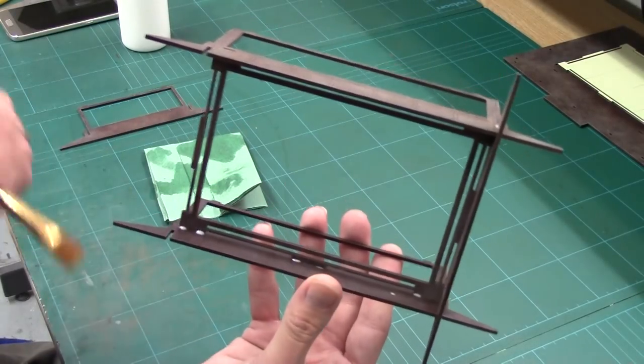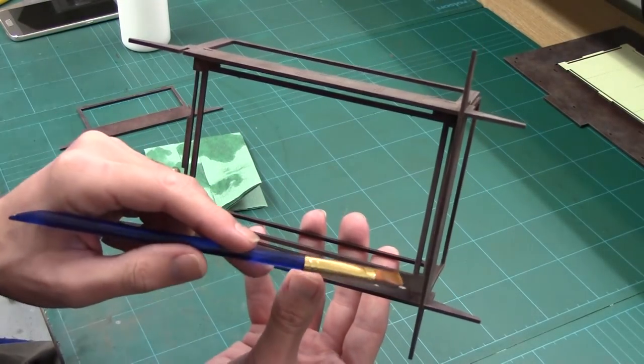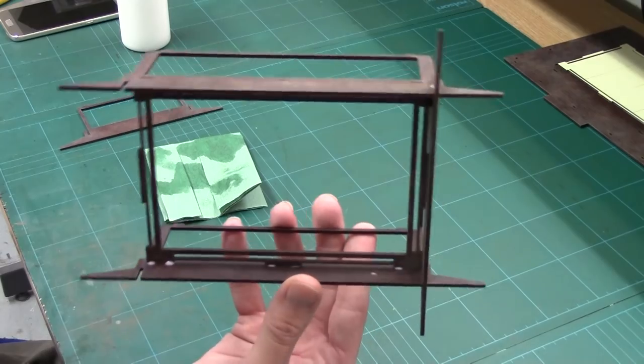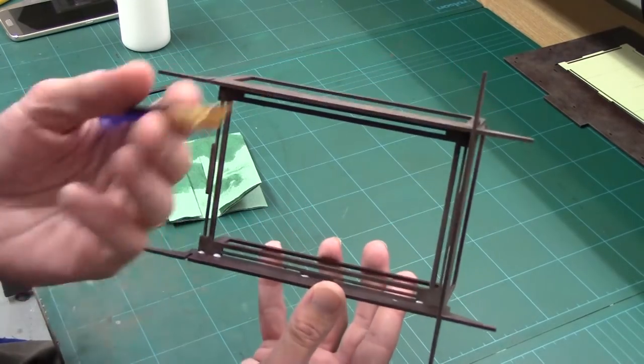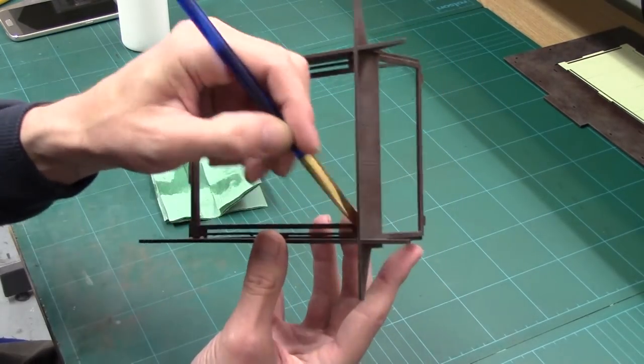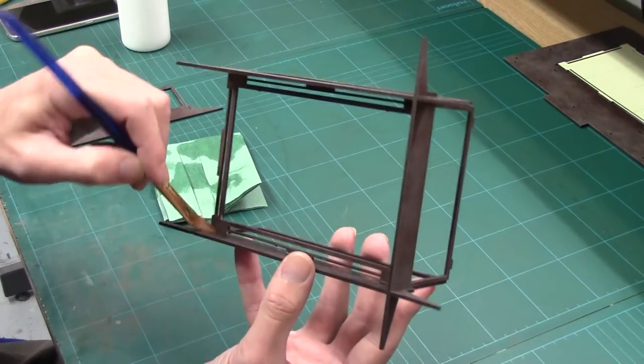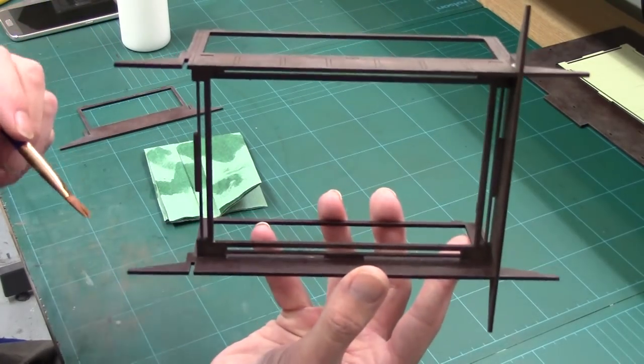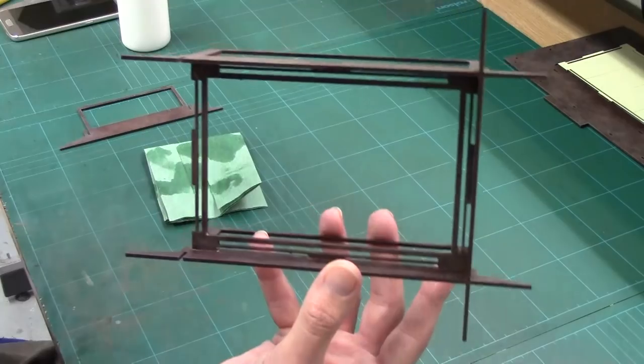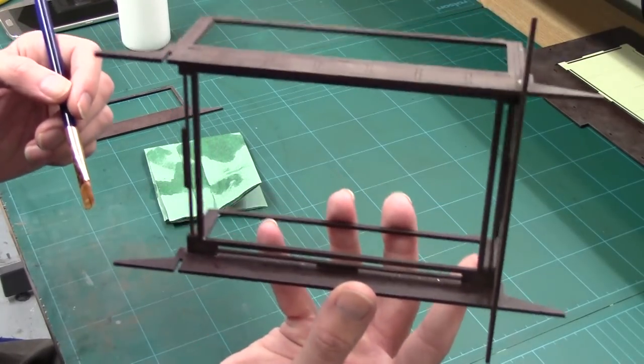Right, next, as you're putting it together, you'll force PVA out between the joints, leaving those white blobs. Simply use a damp brush and just rub over them. This will clean the blobs off and spread the PVA around the joint, giving you a much better bond.